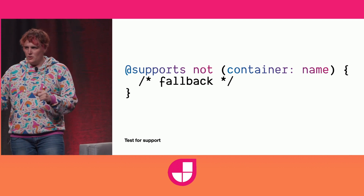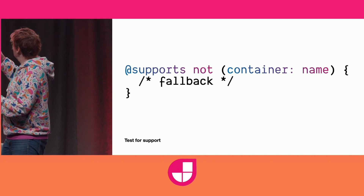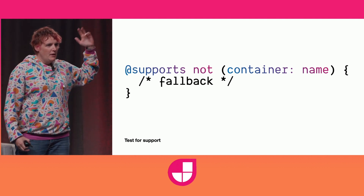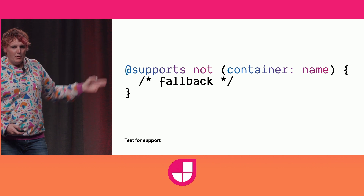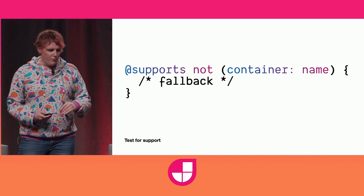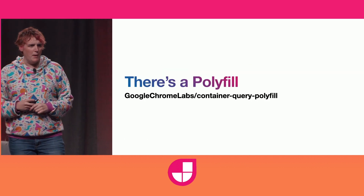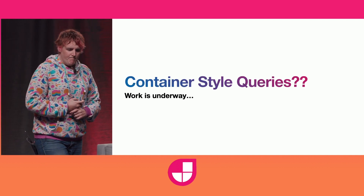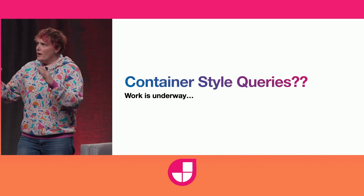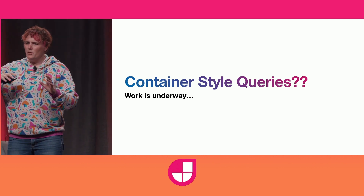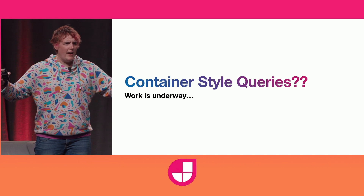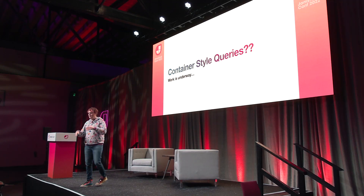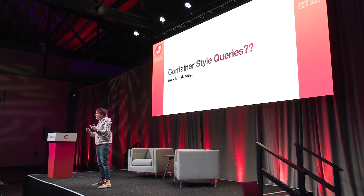If you need to do fallbacks, you can do that with @supports — @supports not container-name is a good way to do it. You can check container-type; any of the container properties will work, and you can put fallback code in there. There's also a polyfill from Chrome Labs if that's more your style. We had media queries where we were able to query not just the size of the media, but user preferences and device interface capabilities — all sorts of things. What else would we want to ask a container?